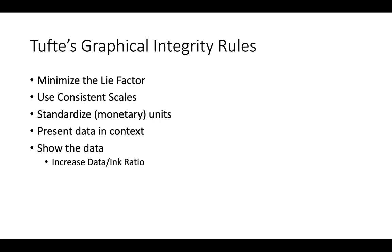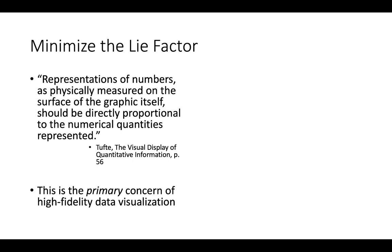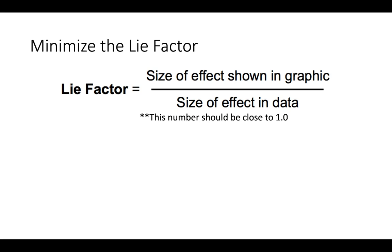The primary concern of high-fidelity data visualization is to minimize the lie factor. The lie factor shows the size of the effect in the graphic over the size of the effect in the data. If they are both 100%, the lie factor will be 1, which is good. You don't want any lie factor. But as we deviate from one, either below or above, we will see significant distortion of the data in how people are perceiving what the data is doing.